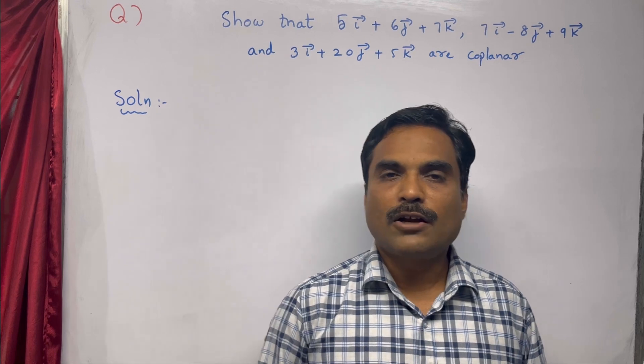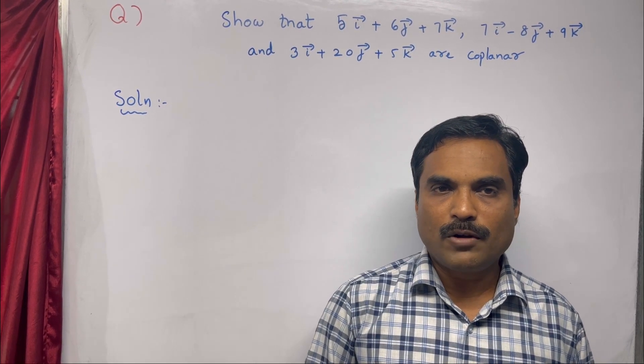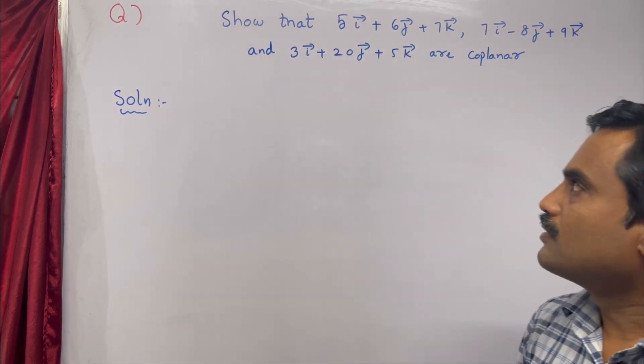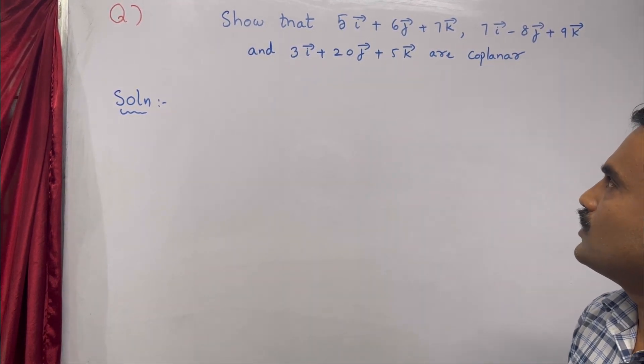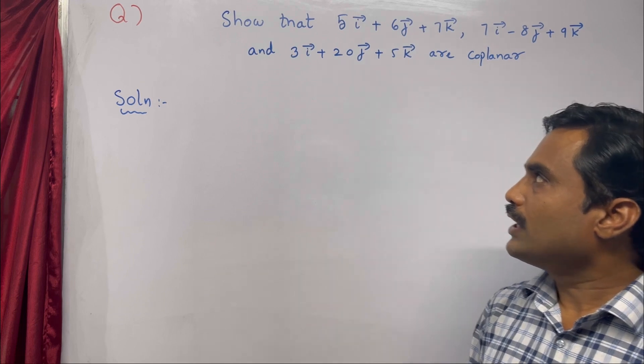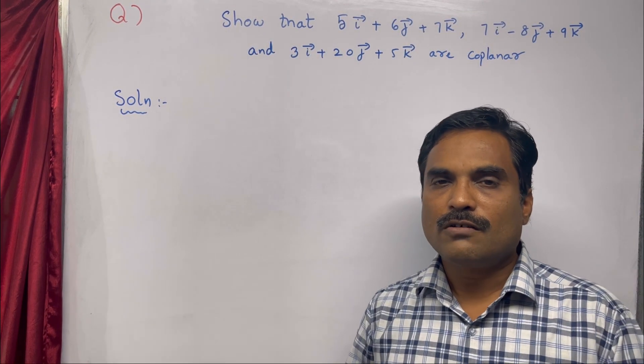Hi dear friends, welcome to my channel. In this video, I am going to solve a mathematical problem under the topic vector algebra. The problem is: show that 5î + 6ĵ + 7k̂, 7î - 8ĵ + 9k̂, and 3î + 20ĵ + 5k̂ are coplanar.